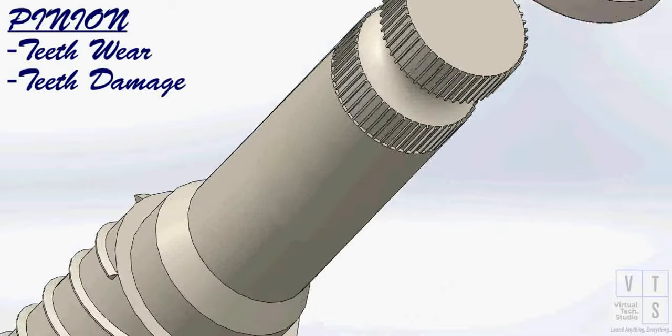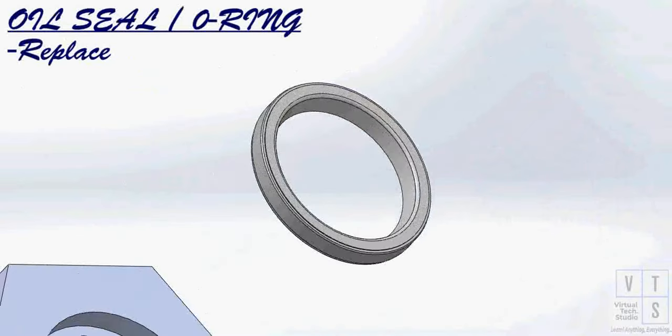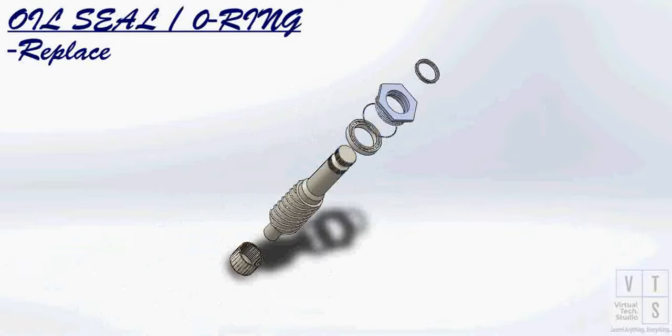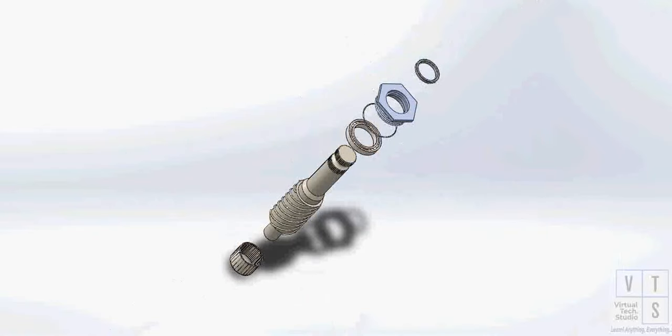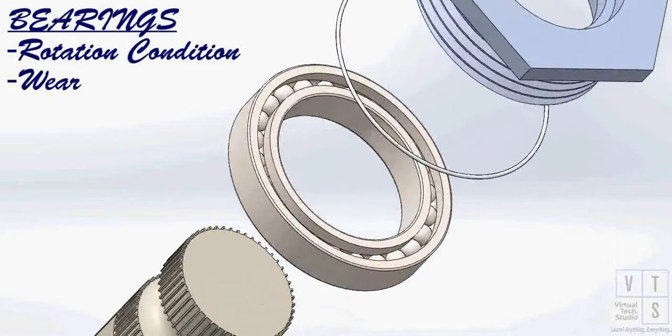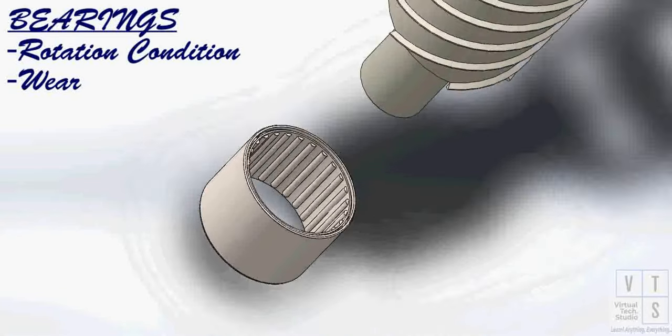Inspect teeth surface of steering pinion for wear or damage. Inspect oil seal and o-ring for any sign of leakage and damage. It is much better to replace such cheap parts no matter if they're found in good condition. Check rotation condition of bearing and inspect for wear. If found defective, replace.